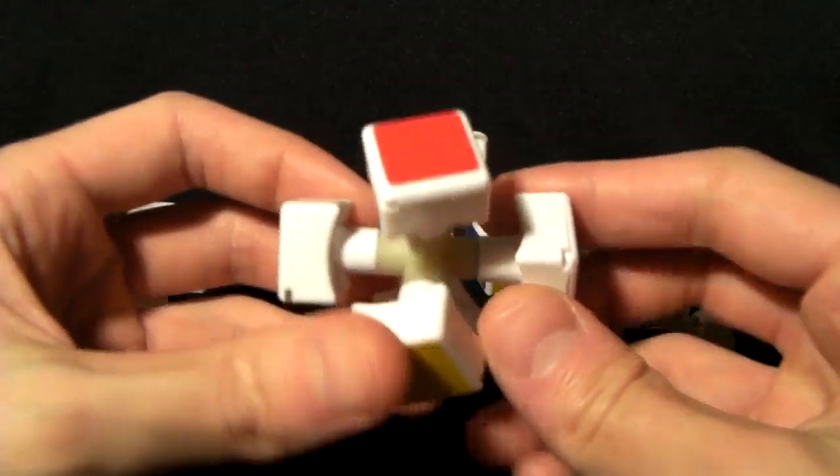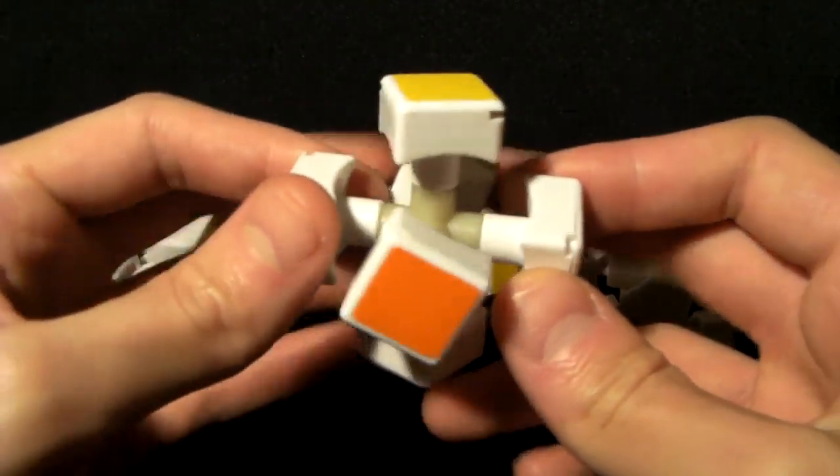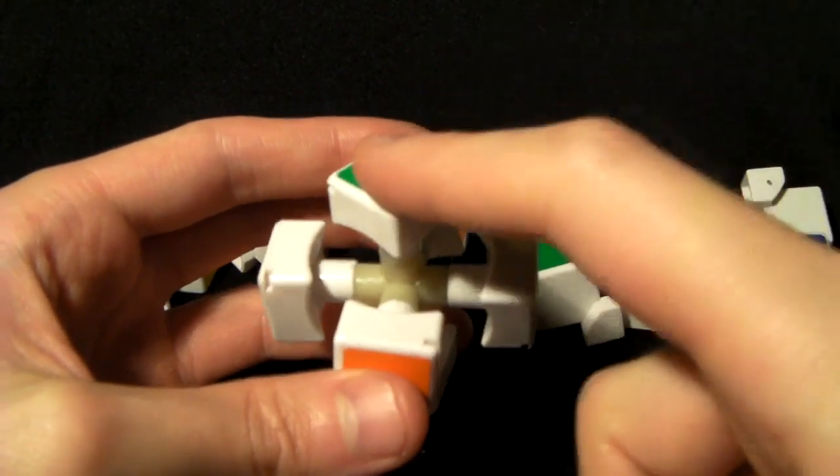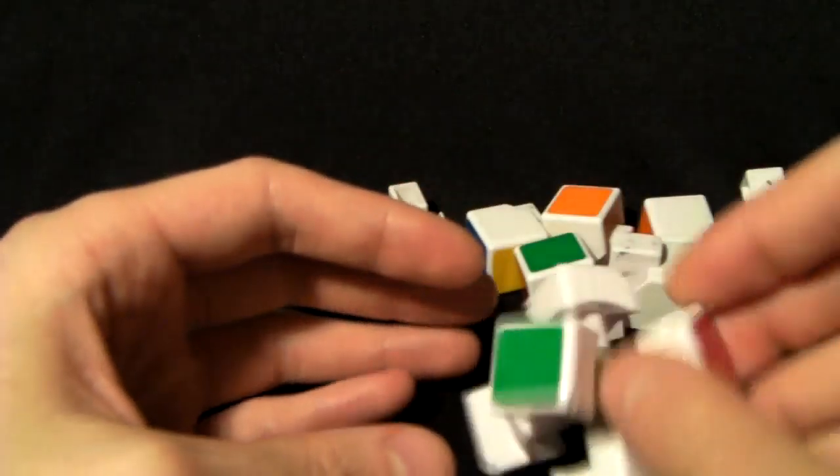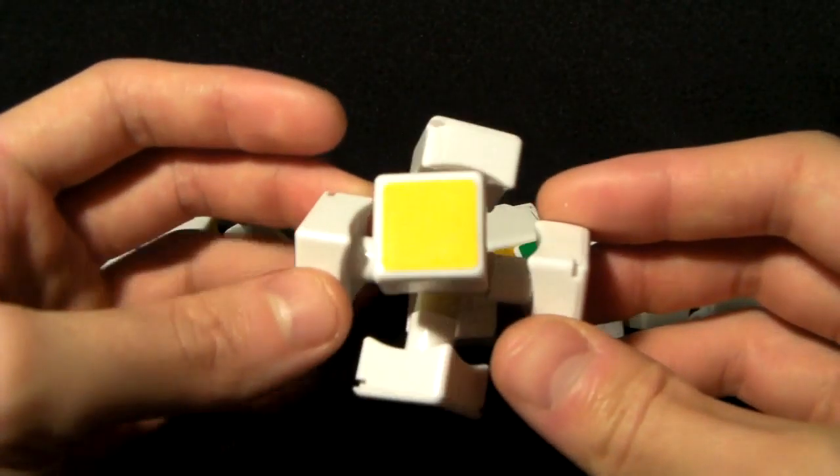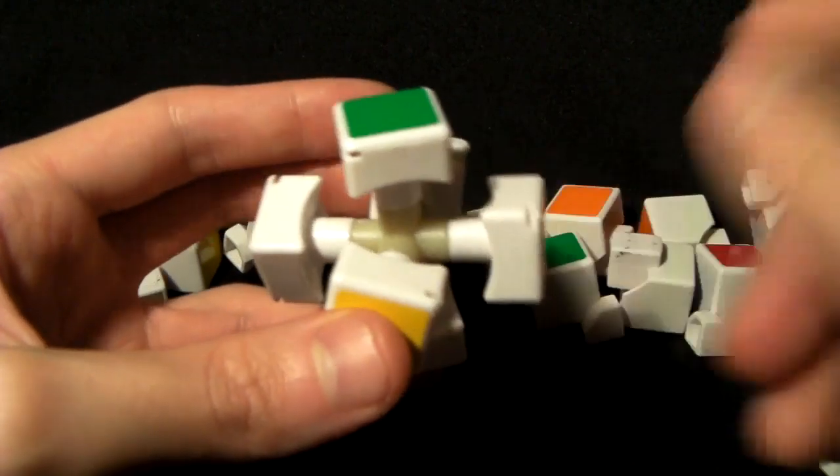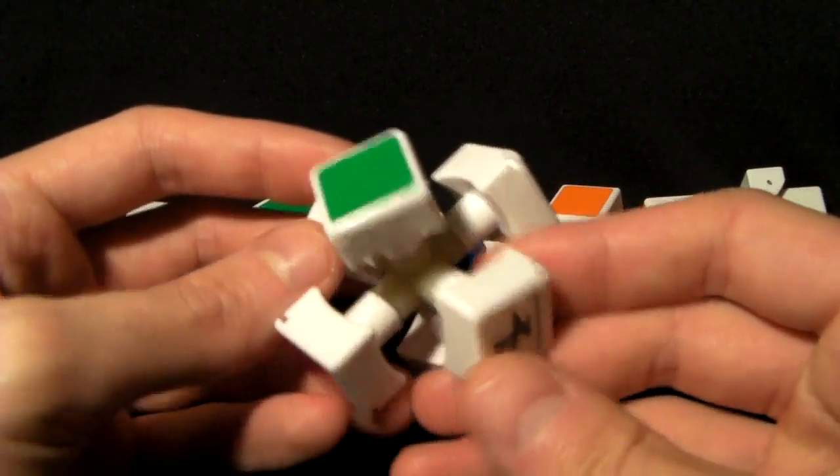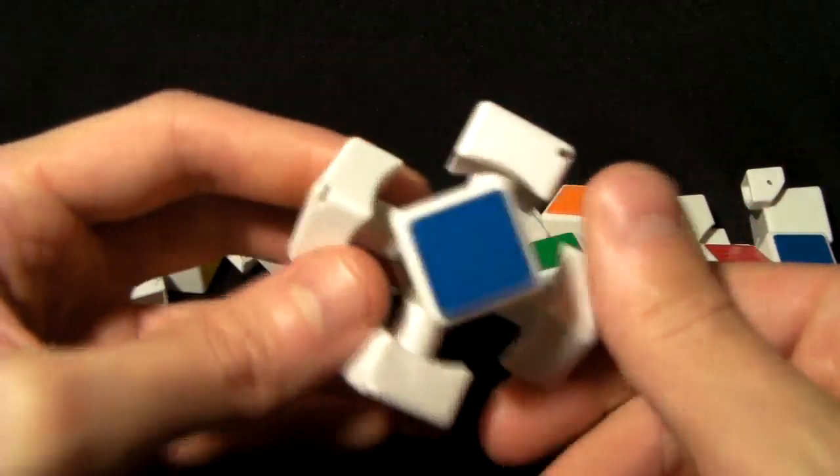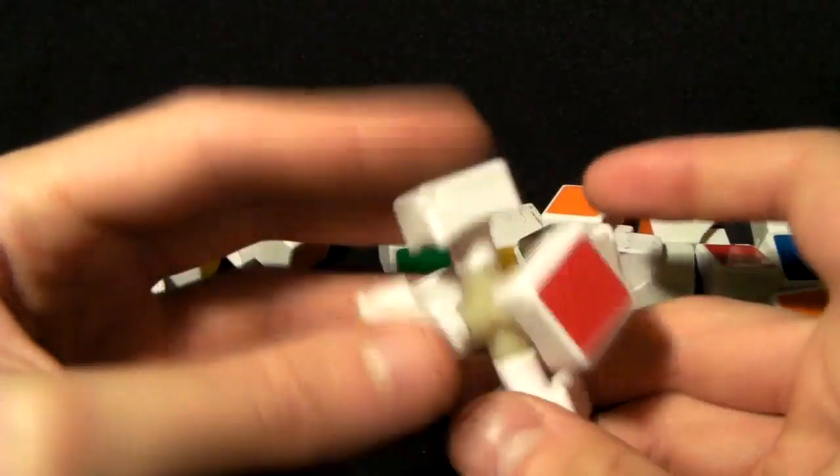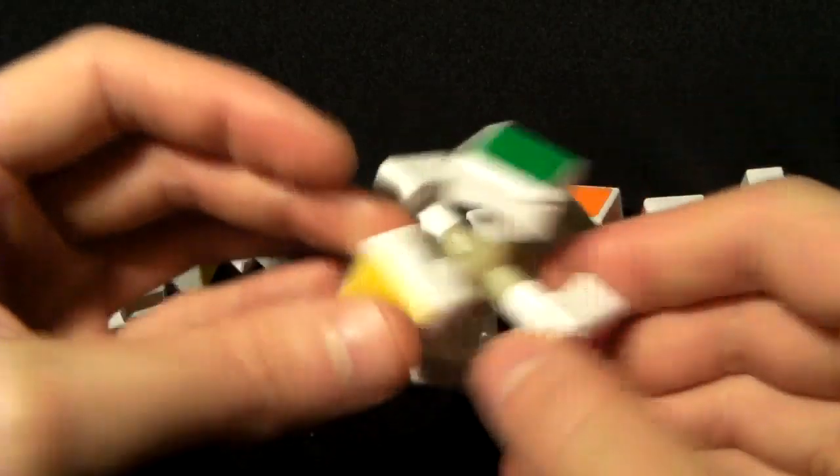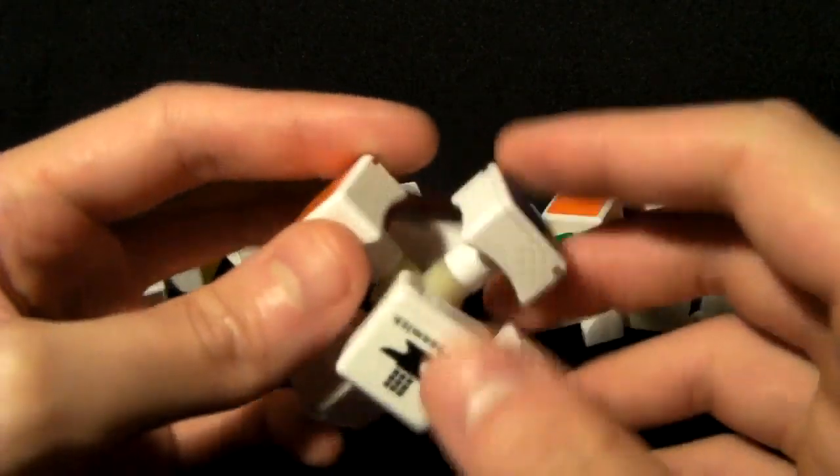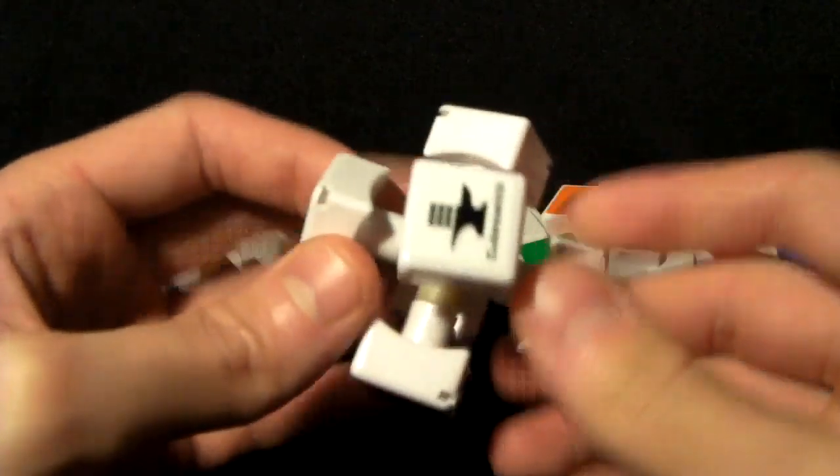One thing to note about the 3x3 Rubik's Cube and all odd-number Rubik's Cubes—so the 5x5 as well—is that these centers are always in fixed position. They only rotate; they never move relative to each other. So on a standard colored Rubik's Cube, you always have white and yellow opposite, you always have blue and green opposite, likewise red and orange opposite. That just comes as a helpful guide when you're solving the Rubik's Cube.